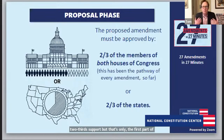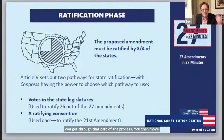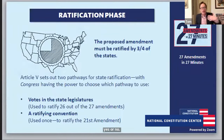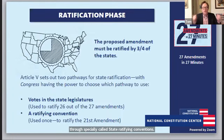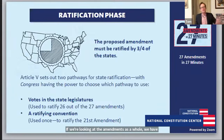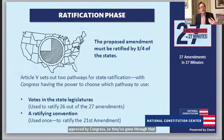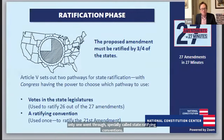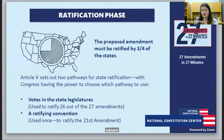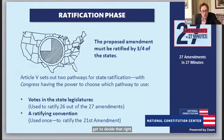Even after the proposal stage, proposed amendments are sent to the states for ratification — the American people say yes or no. There are two mechanisms: going through state legislatures, or through specially called state ratifying conventions. Either way, you need three-fourths of the states. All 27 ratified amendments went through Congress for proposal. All but one were ratified through state legislatures — only the 21st Amendment, which repealed Prohibition, went through state ratifying conventions. Congress decides which ratification method is used.